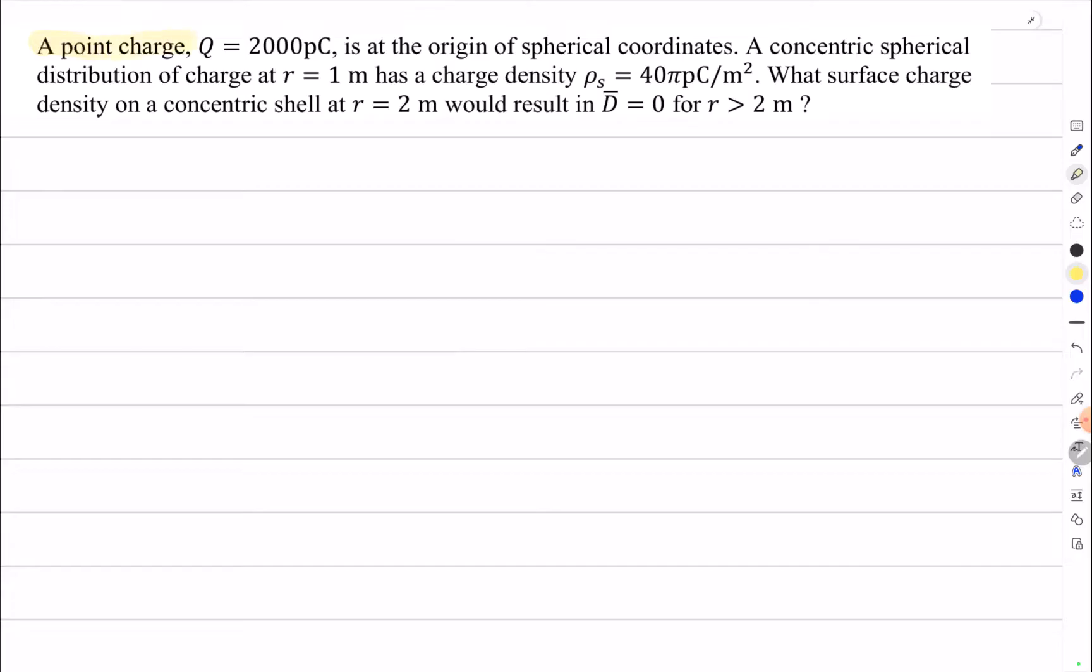A point charge Q equal to 2000 picocoulombs is at the origin of spherical coordinates. A concentric spherical distribution of charge at r equal to one meter has charge density ρ_s equal to 40 picocoulombs per square meter. What surface charge density on a concentric shell at r equal to two meters would result in D equal to zero for r greater than two meters?